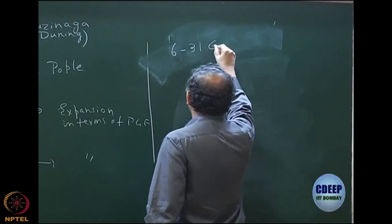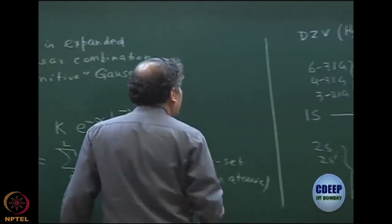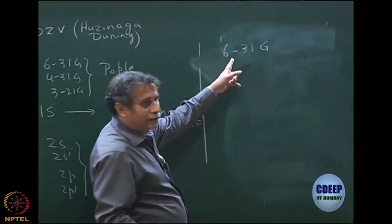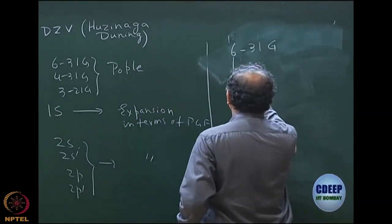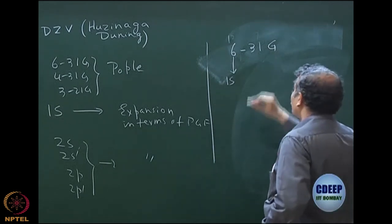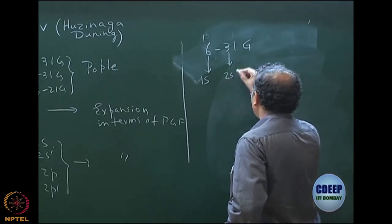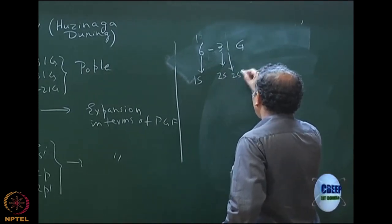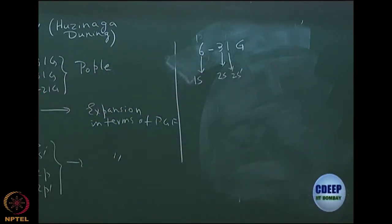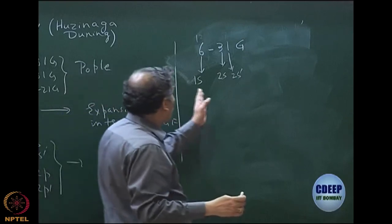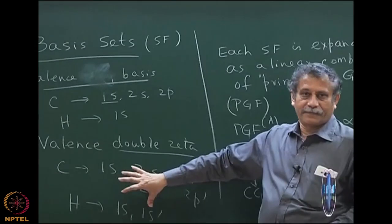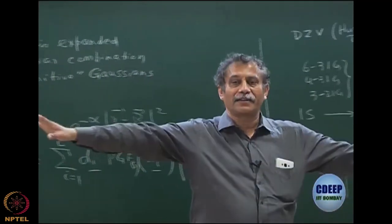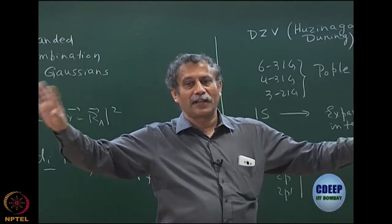Let me now explain 6-31G, which is a very common basis set. The dash is very important — it separates core from valence. The 6 is the number of primitive Gaussians used to expand 1s. The 3 is the number of primitive Gaussians used to expand 2s, and the 1 is uncontracted for 2s'. So 6-31G describes the PGF counts for each contracted function — not the number of atomic orbitals.